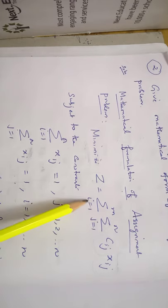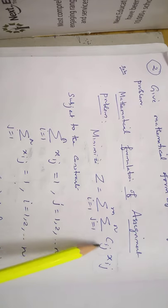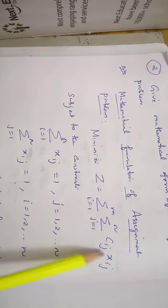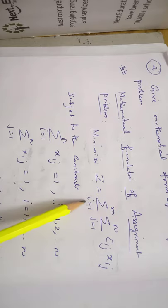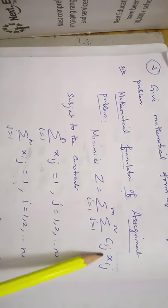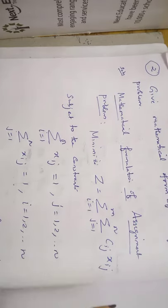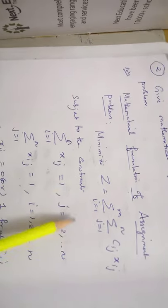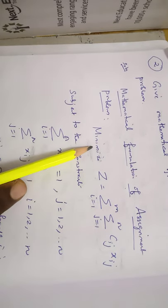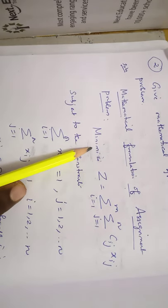For example, putting i equal to 1 and j equal to 1 gives C_11 times X_11. Taking i equal to 1 and j equal to 2 gives C_12 times X_12, and so on. This is the objective function.